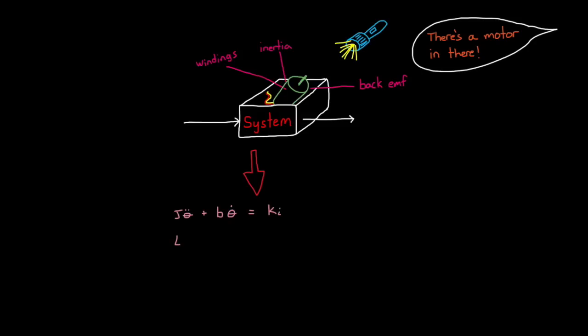This might be free body diagrams, Lagrangian mechanics, or building a larger model from individual components, for example. This is what it means to derive a model from first principles. You're going all the way back to the fundamental physical concepts and assumptions.